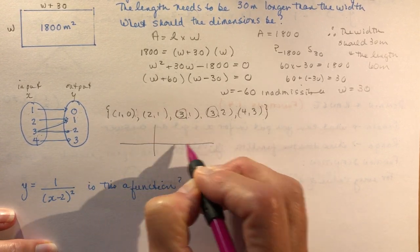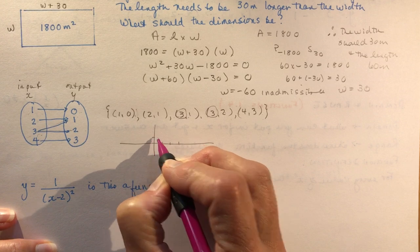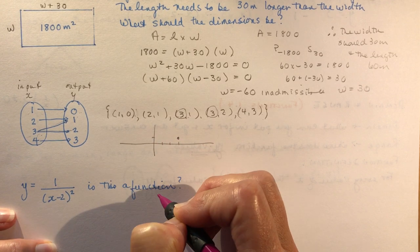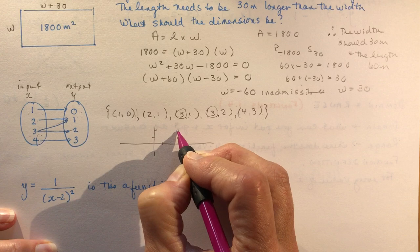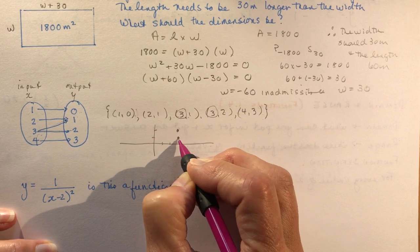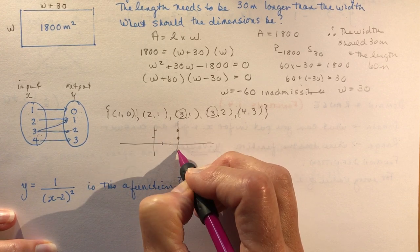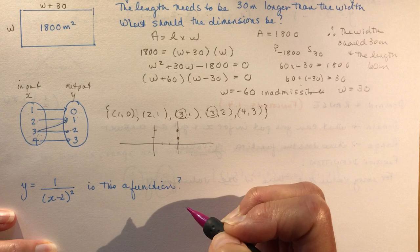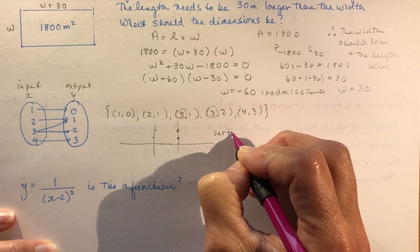So if you were to graph this, you'd have one two three and one. That would be one coordinate and three and two. And you would have two points above each other and that would be inadmissible for a function using the vertical line test. Remember that one?